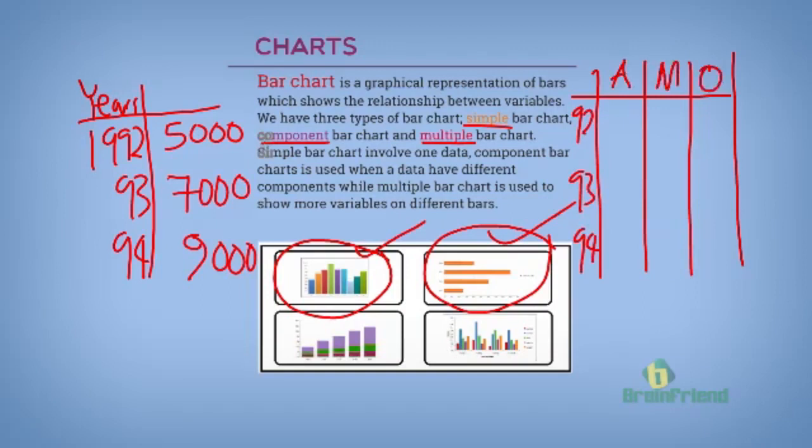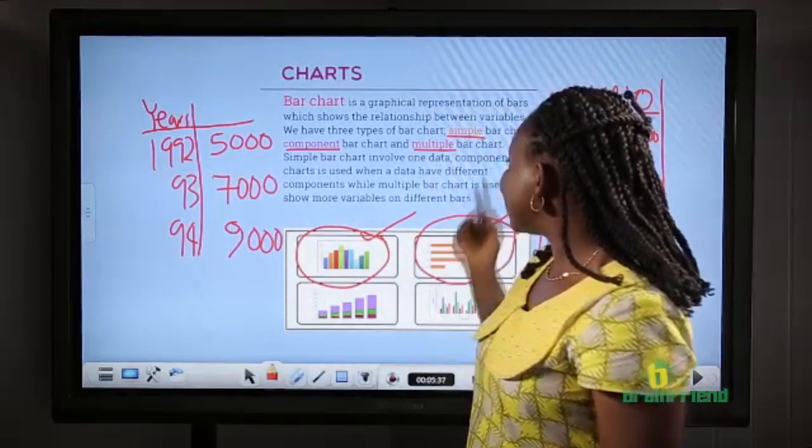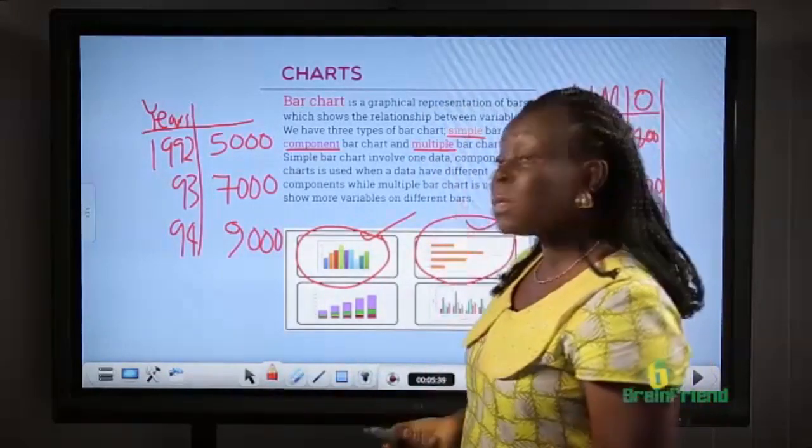For 1992, we have 200, we have 300 here, and 400. 250 in 1993, 270, and 290, and 400 for apples, 300 for mango, and 150 for oranges. Now, when we have a scenario like this, this can be represented on a component bar chart, or on a multiple bar chart.